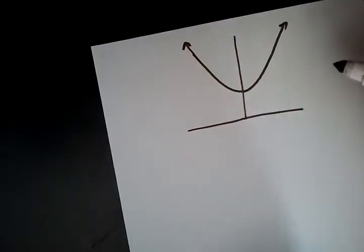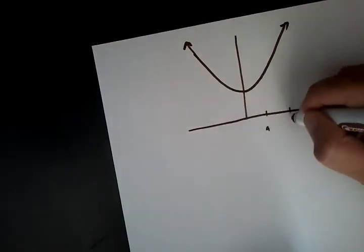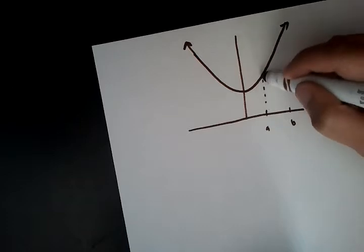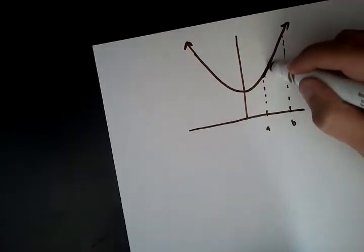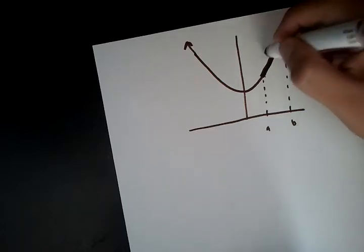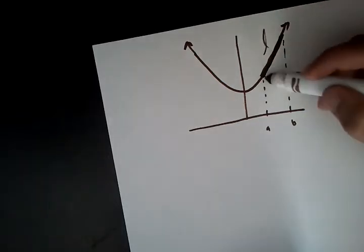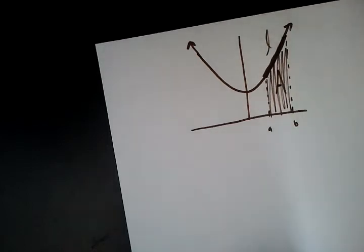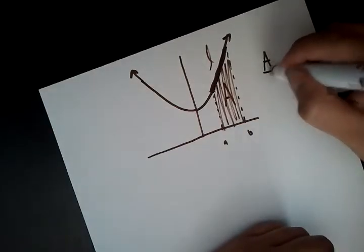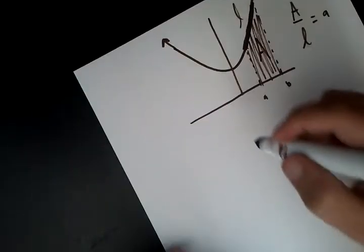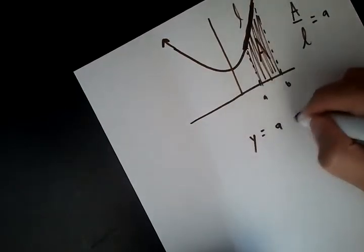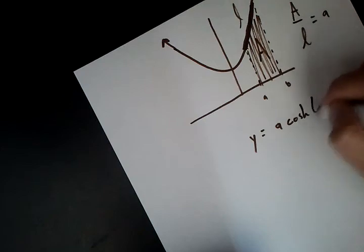And one of the coolest properties of the catenary is that if you take any point A to B on the catenary, any point whatsoever, they could be on the left side, wherever you want. And you take the length, the length of the arc right here between them. We'll call that L. And you take the area underneath the catenary. We'll call that A. And you take A over L. You're going to get a. And do you guys remember what a is? a is that original constant that we put into the catenary.